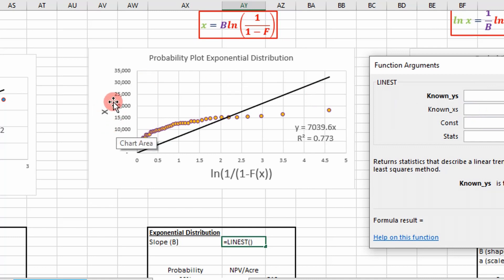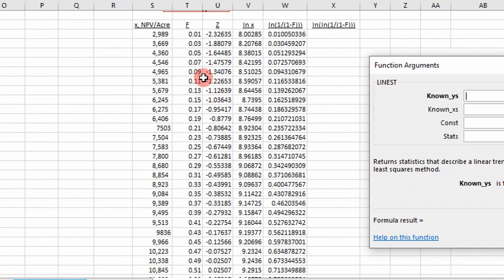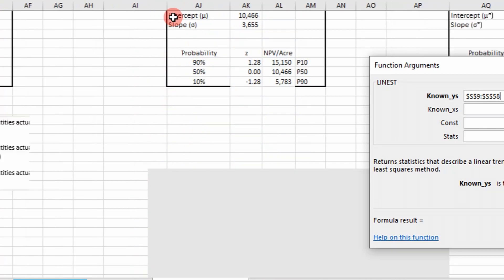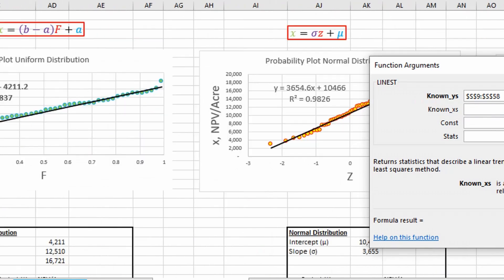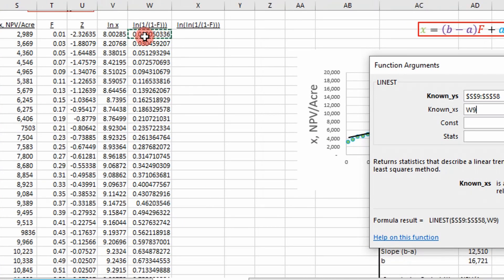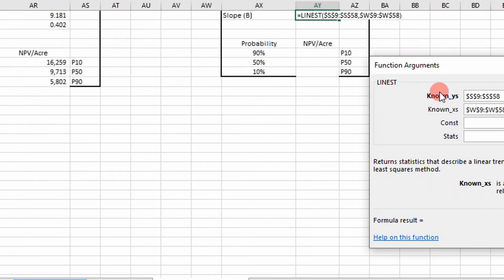In this case, our y's are going to be our random variables and our x's are going to be this right here, so we go ahead and pick those and then it's going to ask for two more arguments.